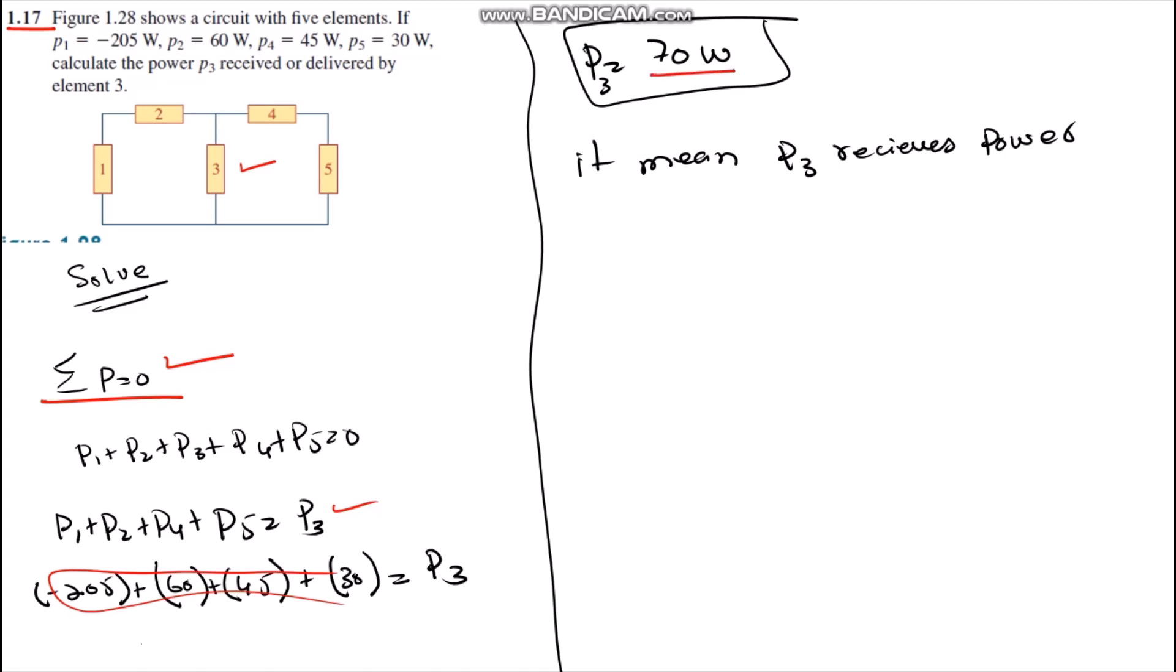And it is positive 70 watts. It means the power P3 receives power from particular battery or power source.